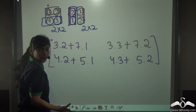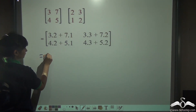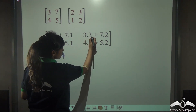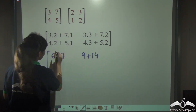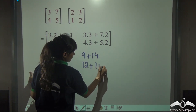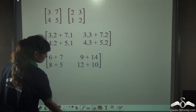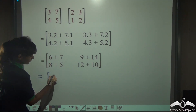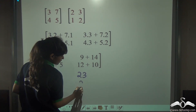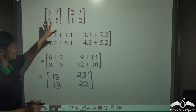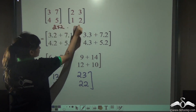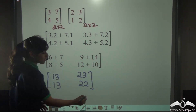Now solving this is not very tough. Let us solve: 3 into 2 is 6 plus 7 is 13; 3 into 3 is 9 plus 14 is 23; 4 into 2 is 8 plus 5 is 13; 4 into 3 is 12 plus 5 into 2 is 10, giving 22. So the product matrix is [13, 23; 13, 22]. What do you notice about the order? Both matrices were 2 by 2, and the product is also 2 by 2.